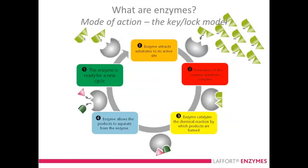It's basically a cycle that goes around and around. The enzyme attracts the substrate to its active site, then forms an enzyme-substrate complex — notice how neatly this fits together. Third, it catalyzes a chemical reaction and changes the products that are formed. Fourth, it allows the products to separate from the enzyme. The enzyme is happy, the products have changed, and then the enzyme is ready for a new cycle and will just keep going.